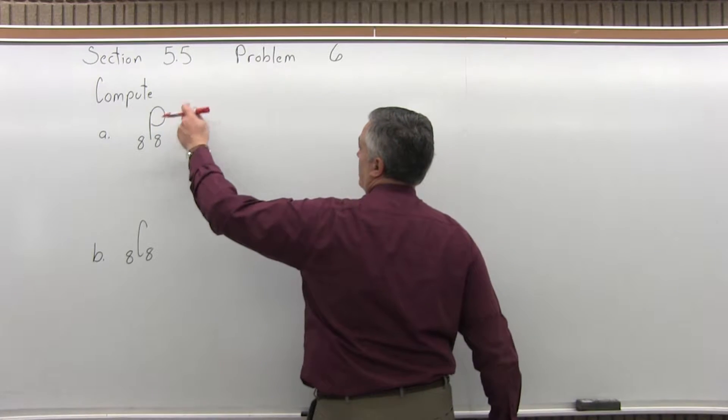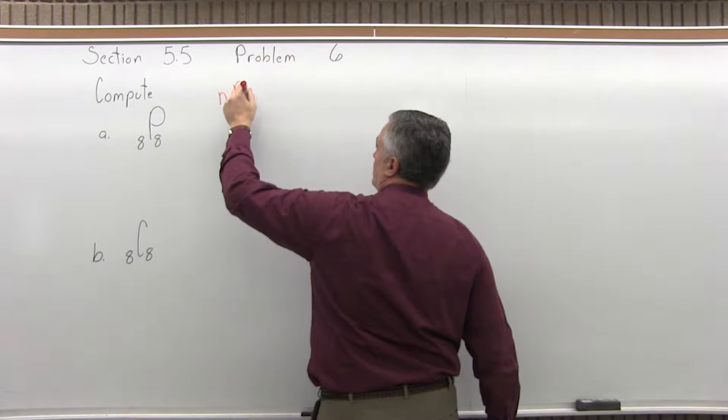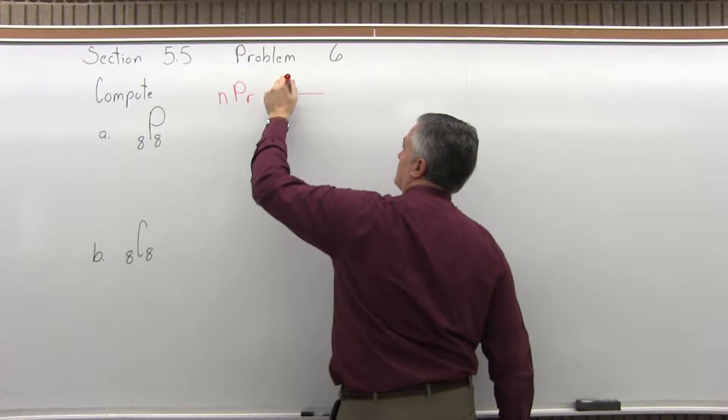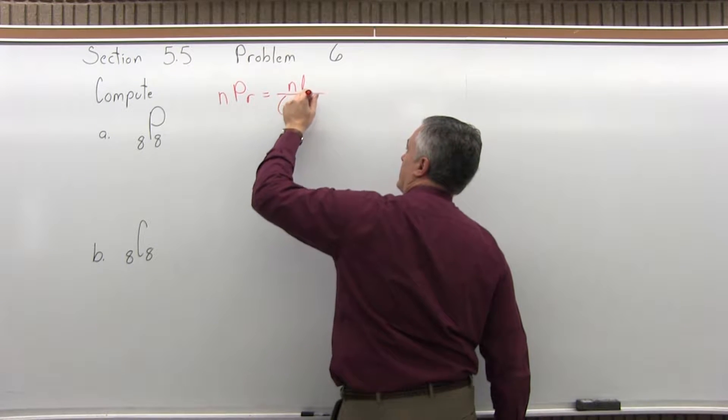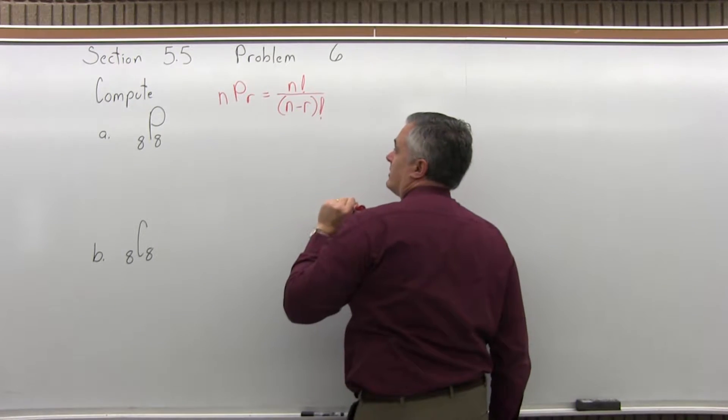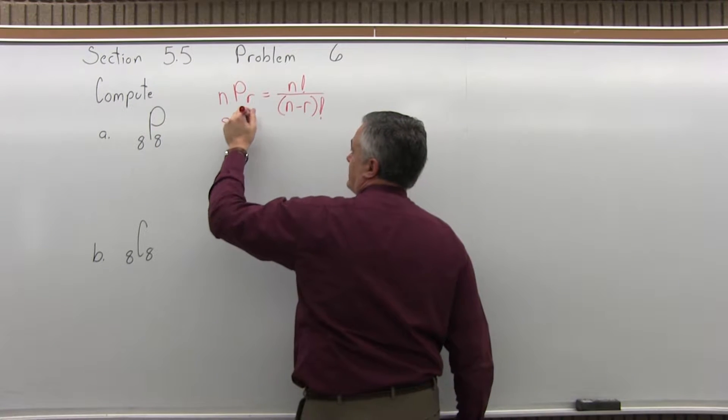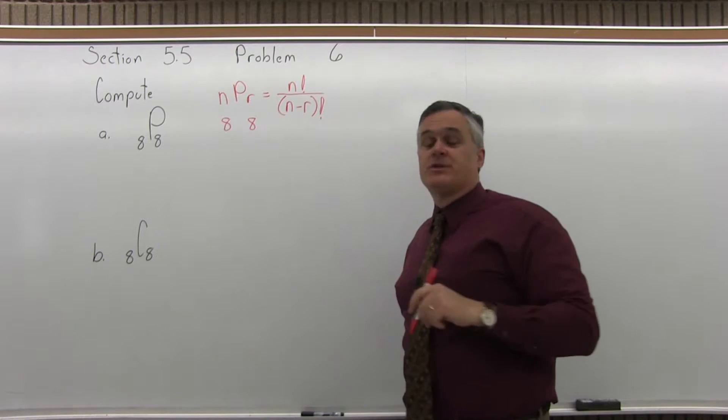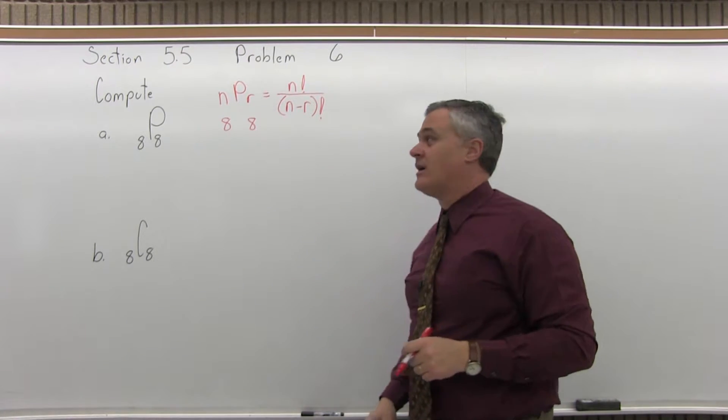So, for 8 permutation 8, remember the permutation formula: n permutation r equals n factorial over, in parentheses, n minus r factorial. Now, I always say the larger number is the n and the smaller number is the r. Well, they're both the same, so one 8 is for n and the other 8 is for r.